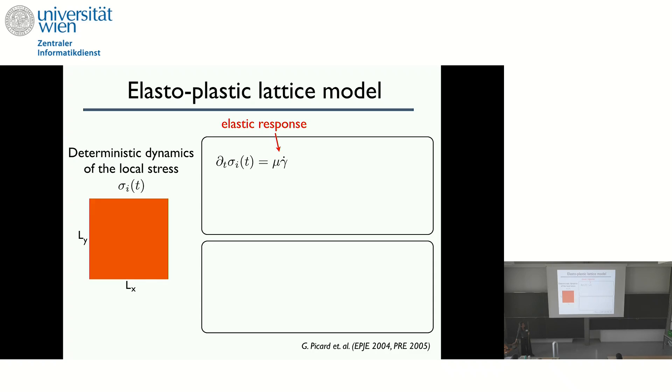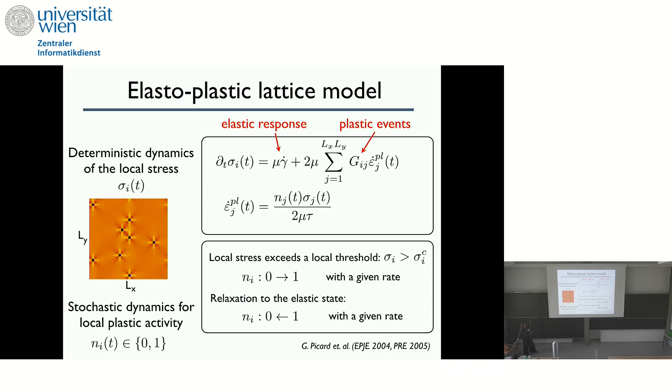Here's what the model looks like. So there's an elastic loading until you hit at some points the yield stress. You create plastic events here in the dark spots that lead to stress redistribution in the system, which is positive along the x and y-axis and negative along the diagonals. And so what you have to calculate then is the convolution of this Eshelby kernel with the plastic strain field. And then the plastic strain field is just given by this variable n, which can take this, it's a boolean, it's zero or one, telling me whether I'm locally plastic or not. And then when I'm locally plastic, I'm basically exponentially decreasing the stress locally.